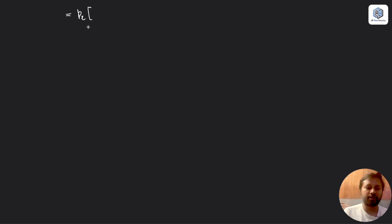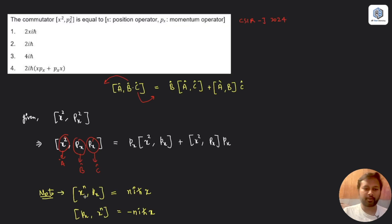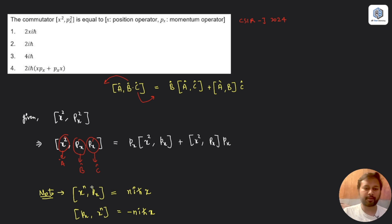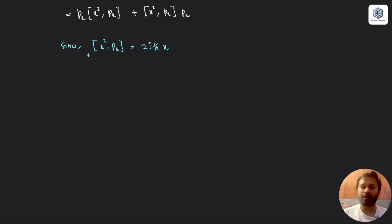Using that identity, we have px·[x², px] + [x², px]·px. The term [x², px] matches [x^n, px] with n = 2, so its value is 2iħx. Substituting, we get px·(2iħx) + (2iħx)·px.